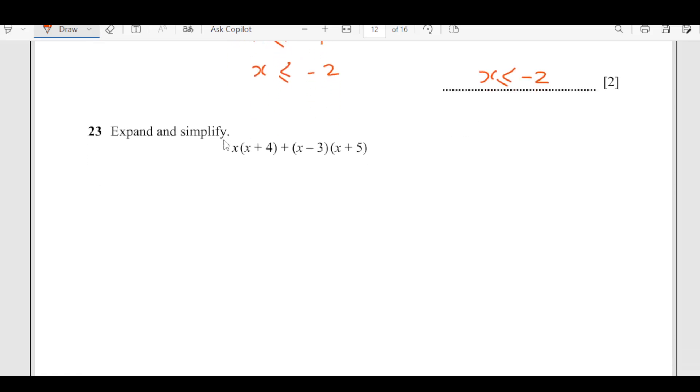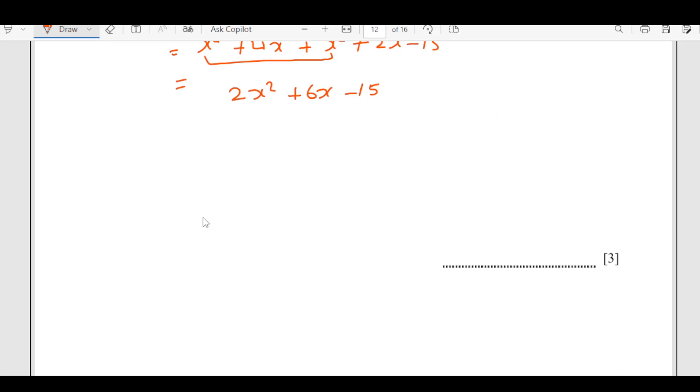Expand and simplify. We are just going to expand the brackets. x will be multiplied to everything inside, so x squared plus 4x. This one is going to be 3 plus x squared plus 5x, then 3 is going to multiply to everything in the other bracket, negative 3x, negative 15. This is x squared plus 4x plus x squared plus 2x minus 15. Combining the like terms, 2x squared plus 6x minus 15.